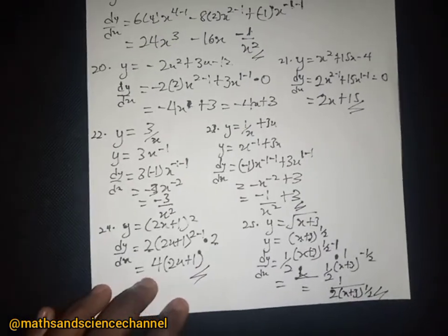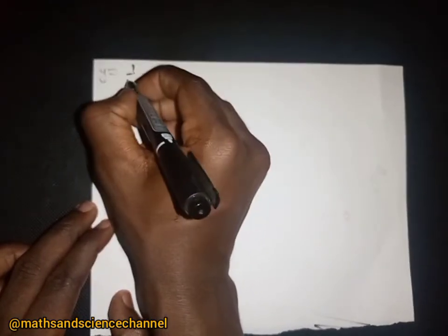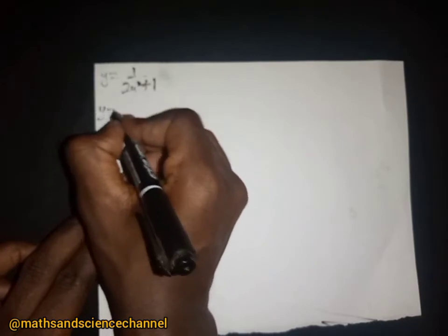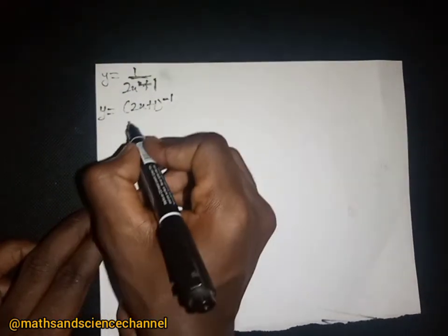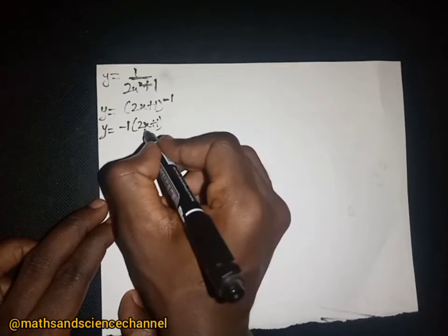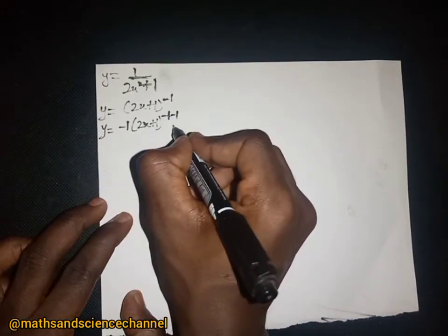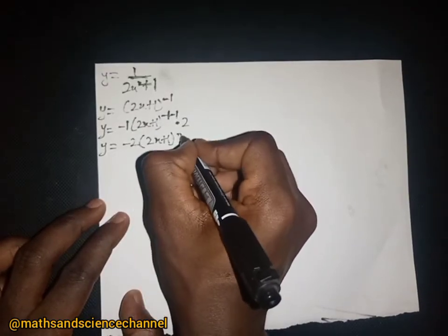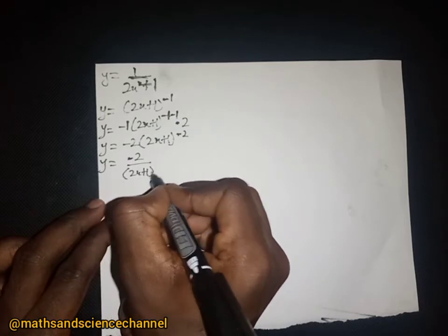Example 26: y equal to 1 over (2x squared plus 1), written as (2x plus 1) to the power negative 1. We drop the negative 1, write the base, subtract 1 from the exponent, and differentiate 2x plus 1 which is 2 — giving negative 2 times (2x plus 1) to the power negative 2, written as negative 2 divided by (2x plus 1) squared.